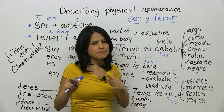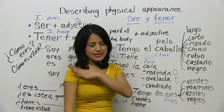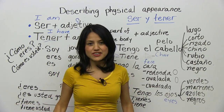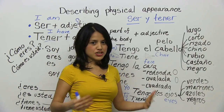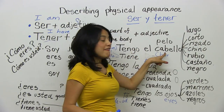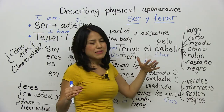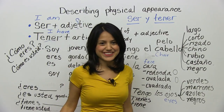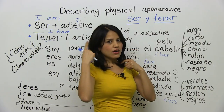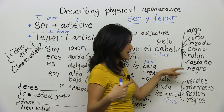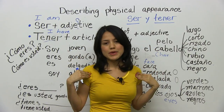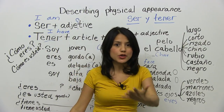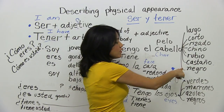Some people, instead of cabello, say pelo. But in Mexico, cabello is used for people and pelo is more for animals or things like that — you can use either, it depends. El cabello chino — curly, rizado — chino means curly too. Rubio — blonde. Am I blonde? No, no soy rubia. Mi cabello no es rubio, es castaño. Yours might be rubio — blonde, brown, black.